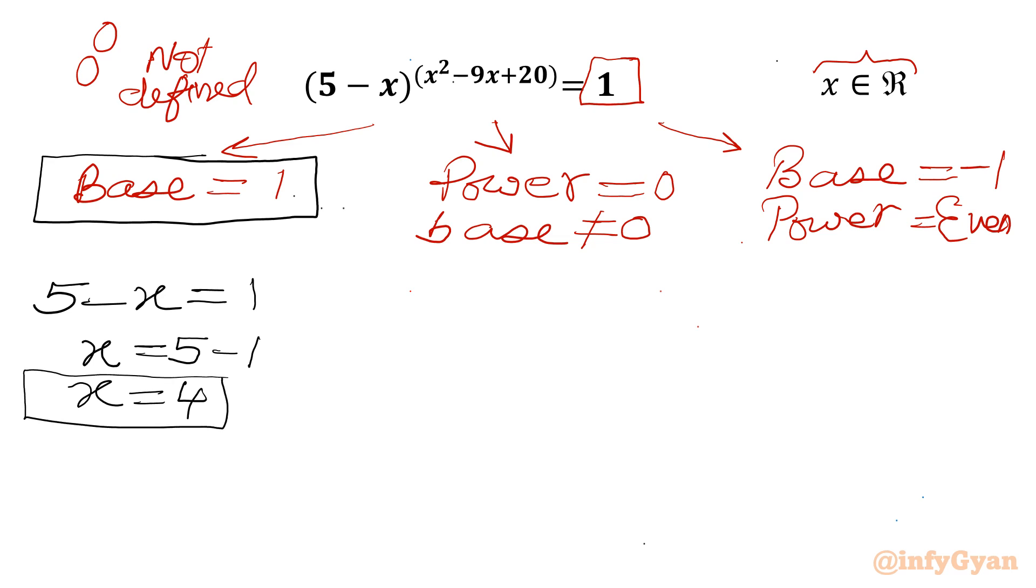Our first real solution. Now second case power equal to 0, but base cannot be 0. So power is x square minus 9x plus 20 equal to 0. I can split our middle term as minus 4x minus 5x. Product is plus 20x square and addition will be minus 9x equal to 0.